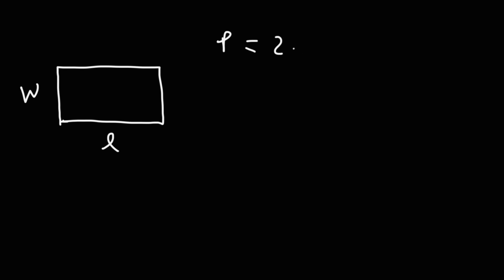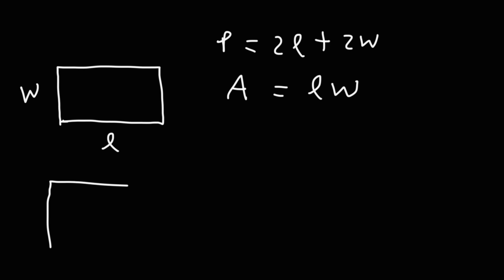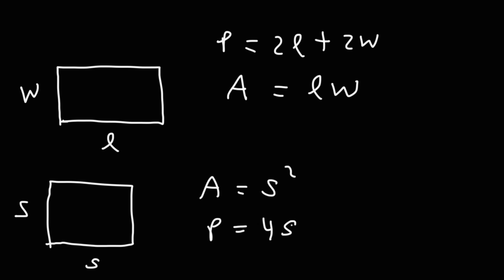Next we have a rectangle with a length and a width. The perimeter of the rectangle is 2L plus 2W, and the area is length times width. For squares with side s, the area is s squared and the perimeter is 4s. The perimeter is the distance around the object.